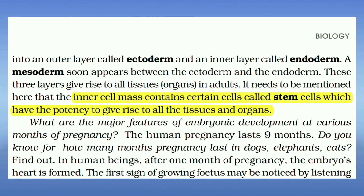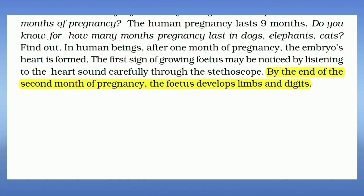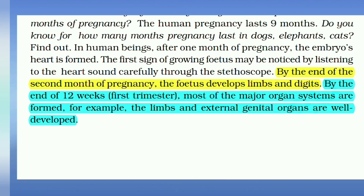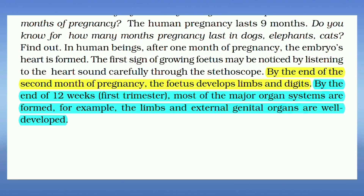The inner cell mass contains certain cells and stem cells which have the potency to give rise to all the tissues and organs. By the end of the second month of pregnancy, the foetus develops limbs and digits. By the end of 12 weeks — the first trimester — most of the major organ systems are formed; for example, the limbs and external genital organs are well developed.